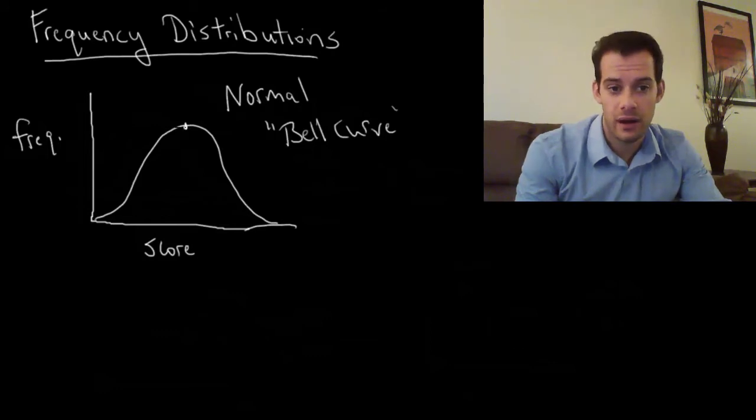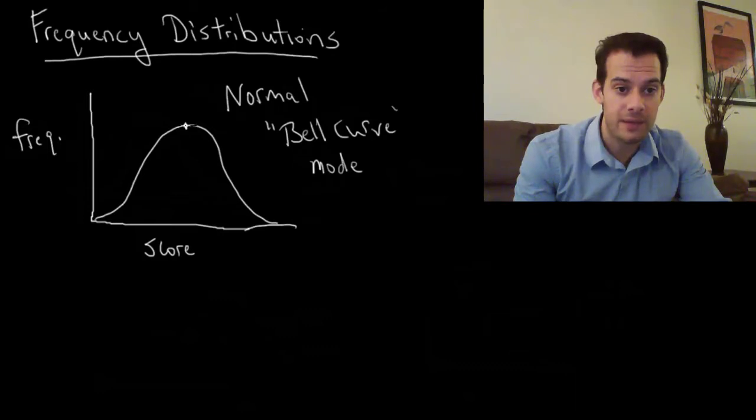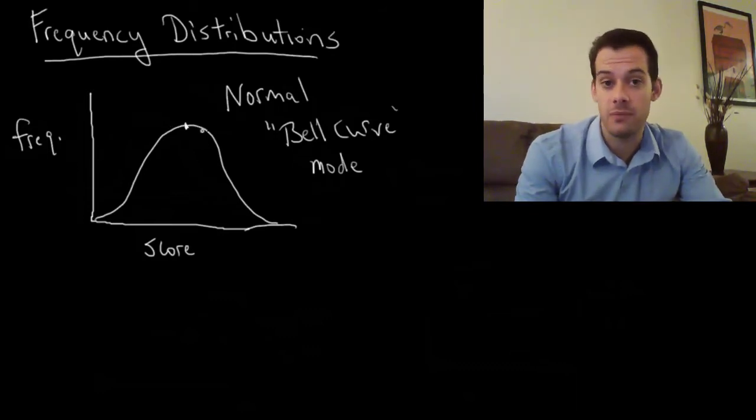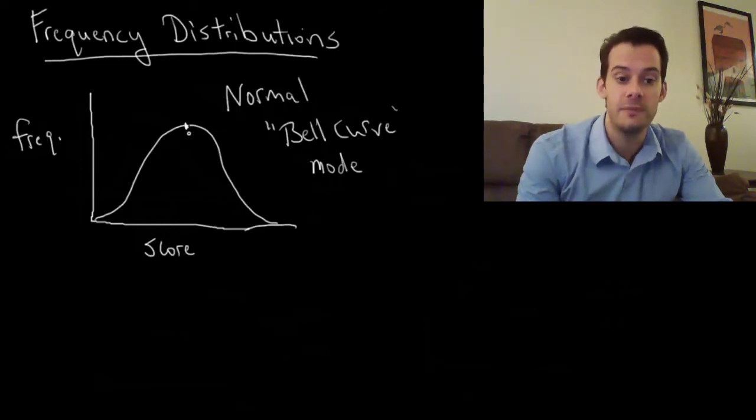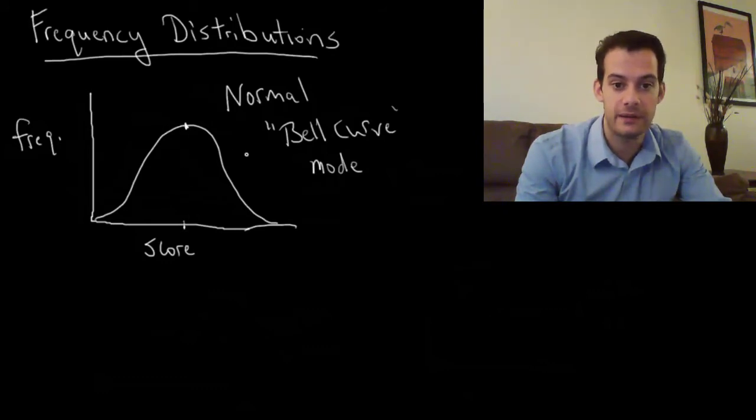So our mode, our most frequent score, is going to be here. It's going to be the peak on this graph. And that's always going to be the mode when we look at a frequency distribution. The peak is always going to be the most frequent score. Here it is here, that's the most frequent. And so whatever this score is here, that's going to be our mode.